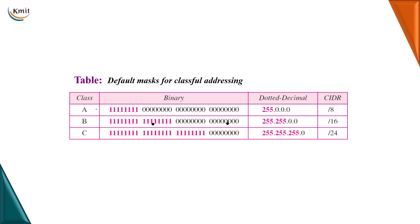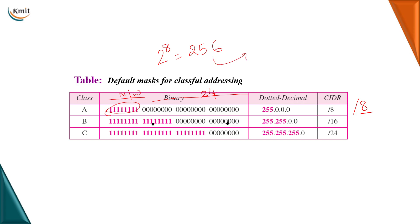If it is a class A address and we are making use of classful addressing, if the first 8 bits or the first byte has all ones and all other bits are zeros, then we call it slash 8 notation. Meaning the first 8 bits are used to represent the network ID and the remaining 24 bits are used to specify the host ID. So I can have 2 power 8, that is 256 networks. In each network I can have 2 power 24 hosts. So the number of networks are less and the number of hosts in each network are more.